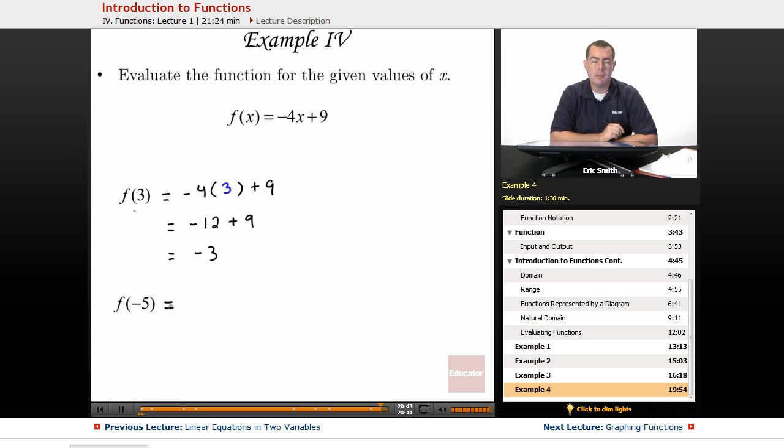Let's do the same thing for f of negative 5. So same function, we'll just put in a different value: negative 5. And now we'll work to simplify it. Negative 4 times negative 5—negative times a negative would be positive. 4 times 5 is 20. 20 plus 9, and we get 29.